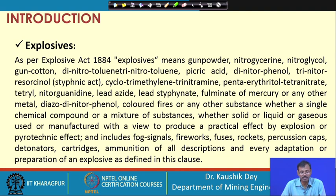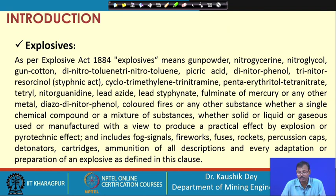Let us see what Explosive Act 1884 is telling about explosive. Explosive Act 1884 states that explosive means gunpowder, nitroglycerin, nitroglycol, gun cotton, dinitrotoluene, trinitrotoluene, picric acid, dinitrophenol, trinitroresorcinol, cyclotrimethyl trinitrate amine, pentaerythritol tetranitrate, tetryl, nitroguanidine, lead azide, lead styphnate, fulminate of mercury, fulminate of other metals, nitrophenols. These are the different chemicals listed in the Explosive Act 1884.